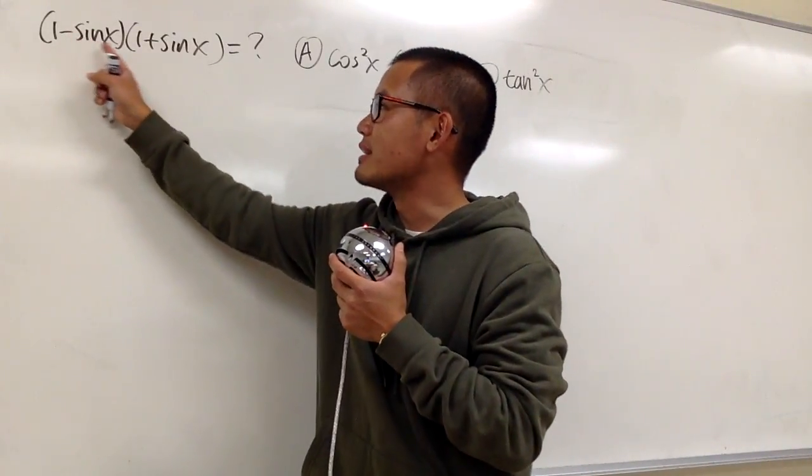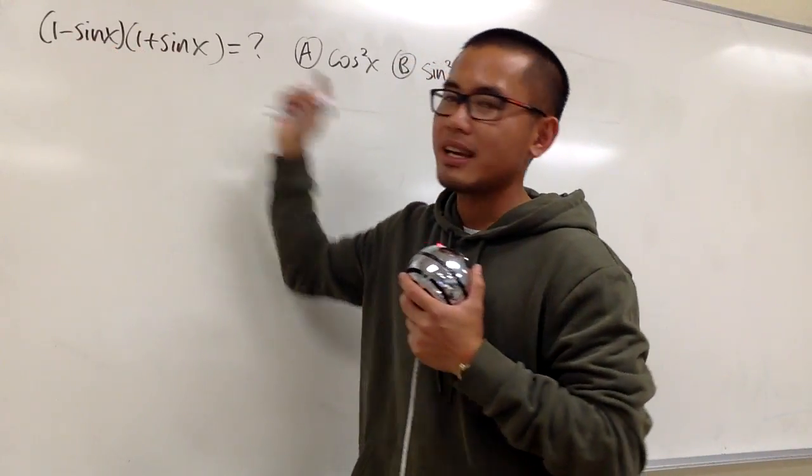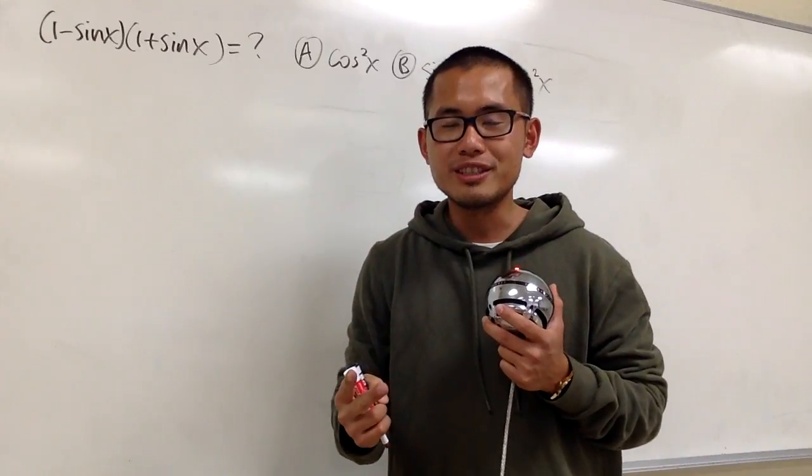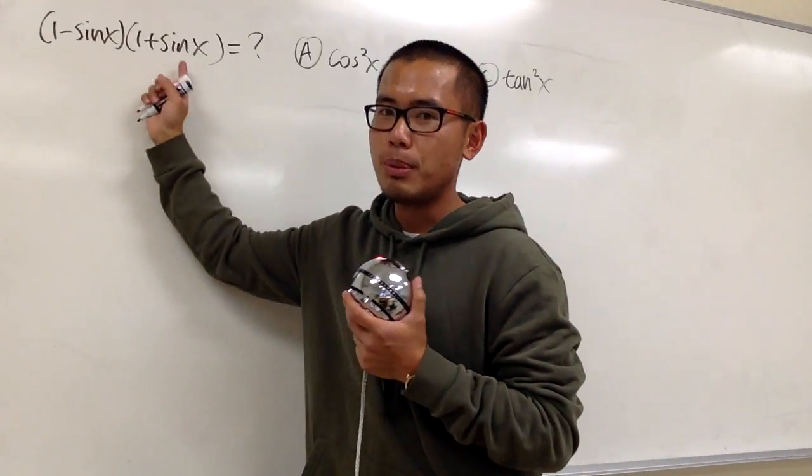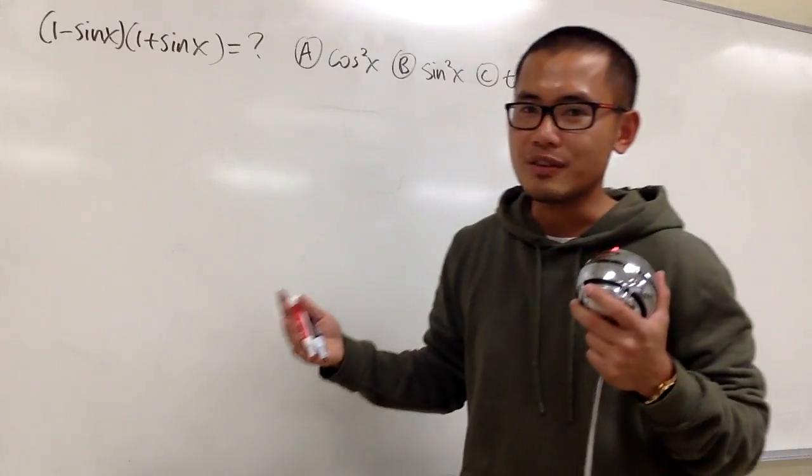For this question, we have 1 minus sin x times 1 plus sin x. We have two ways to do this. The first way is to use the formula to multiply this out, and that's the difference of squares formula.